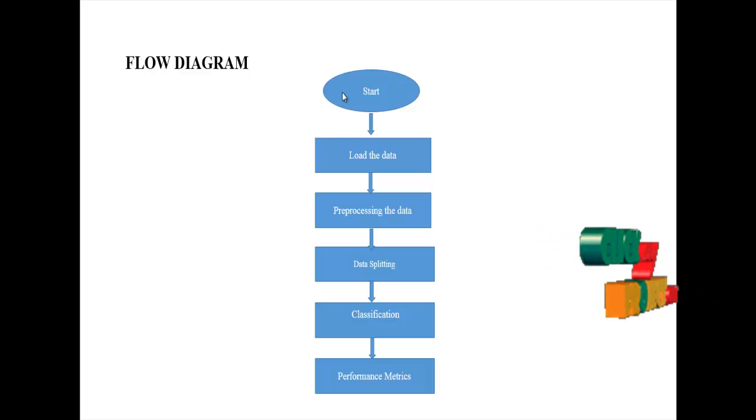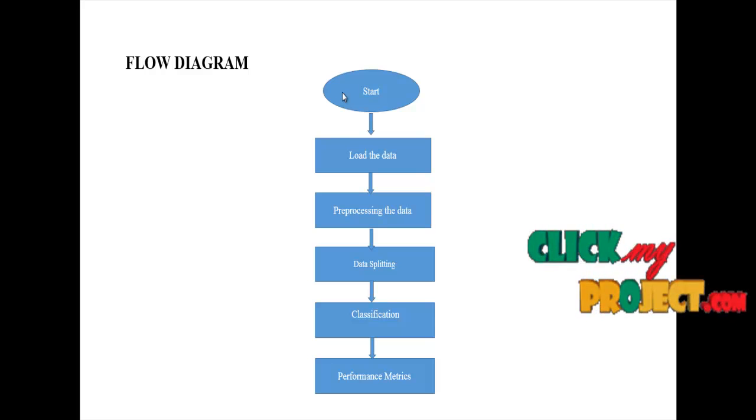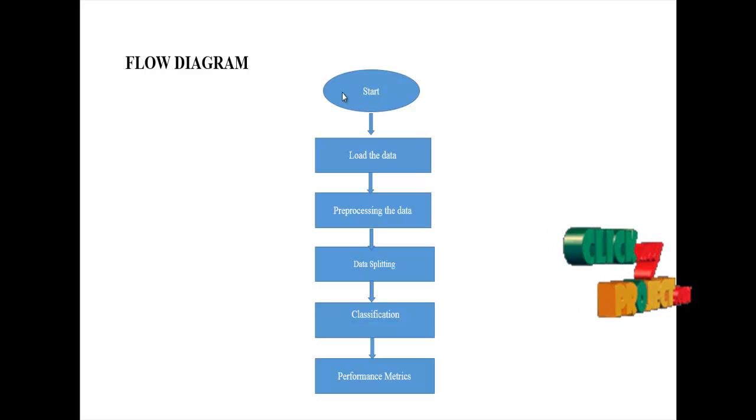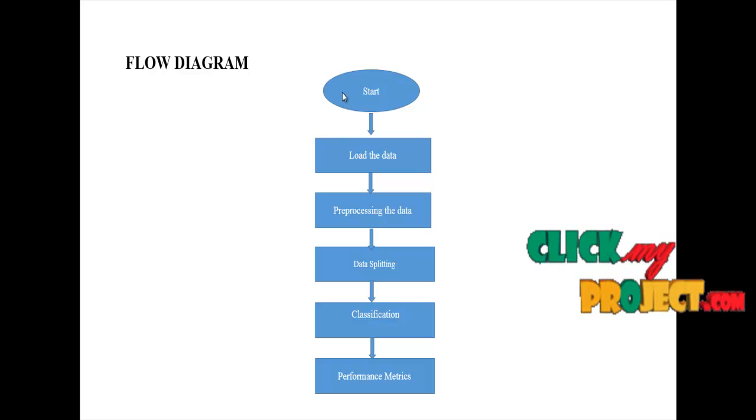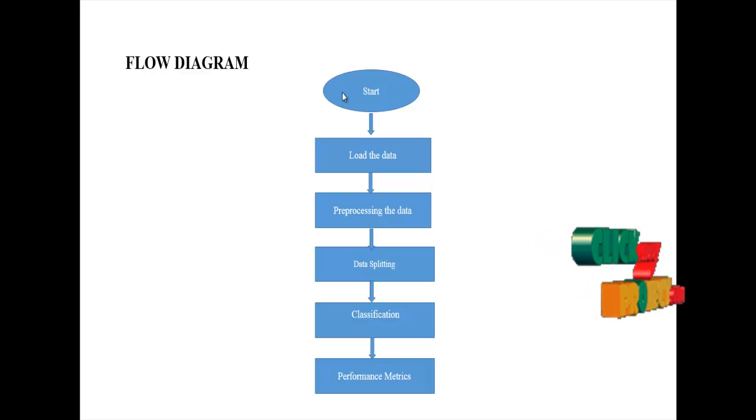Then, we have to implement the data splitting module. In this module, the data splitting is the act of partitioning the input data into two portions. This is mainly used for cross-validation purposes. One portion is used to predict the value and another portion is used to evaluate the model. The two portions are testing and training.